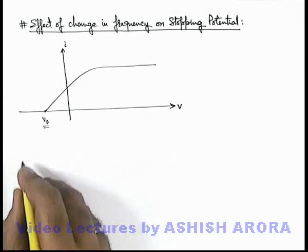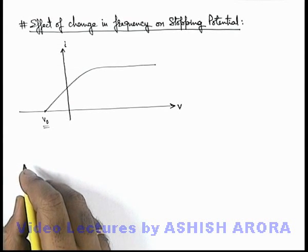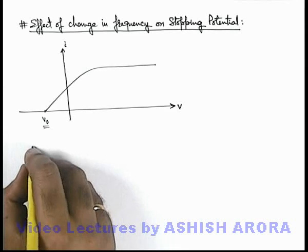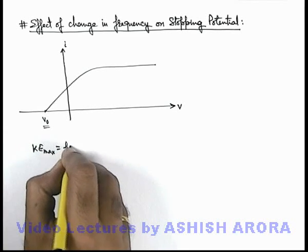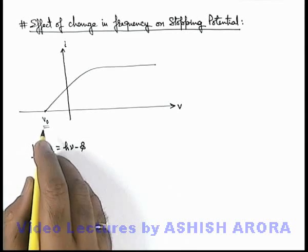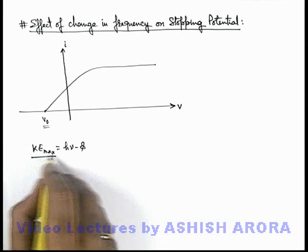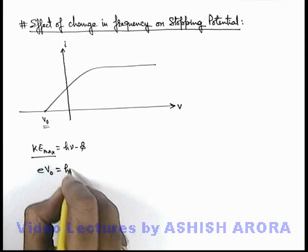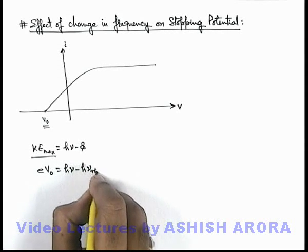This is the potential which is capable of stopping the fastest kinetic energy electron. So we can write, as we know KE max is equal to h nu minus phi. This fastest energy is stopped by the stopping potential V not. So here we can write this maximum kinetic energy is eV not which is h nu minus phi, and the work function can be written as h nu threshold.